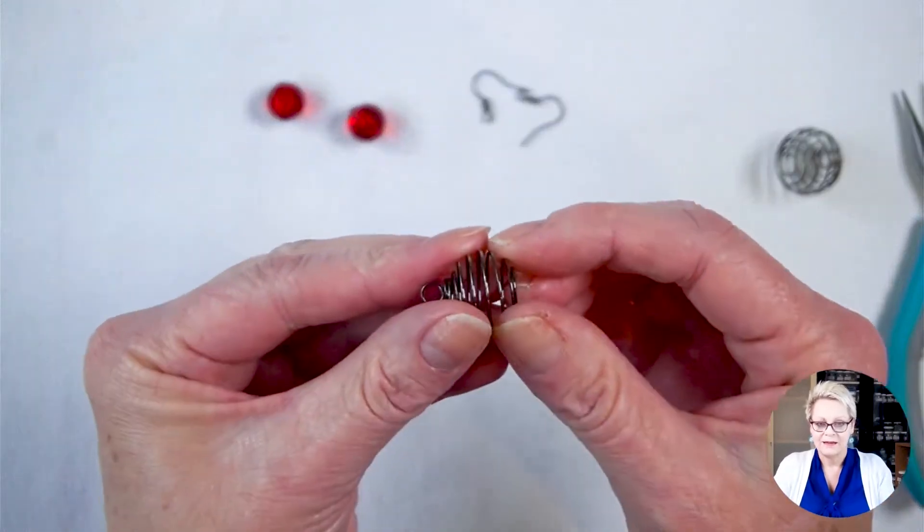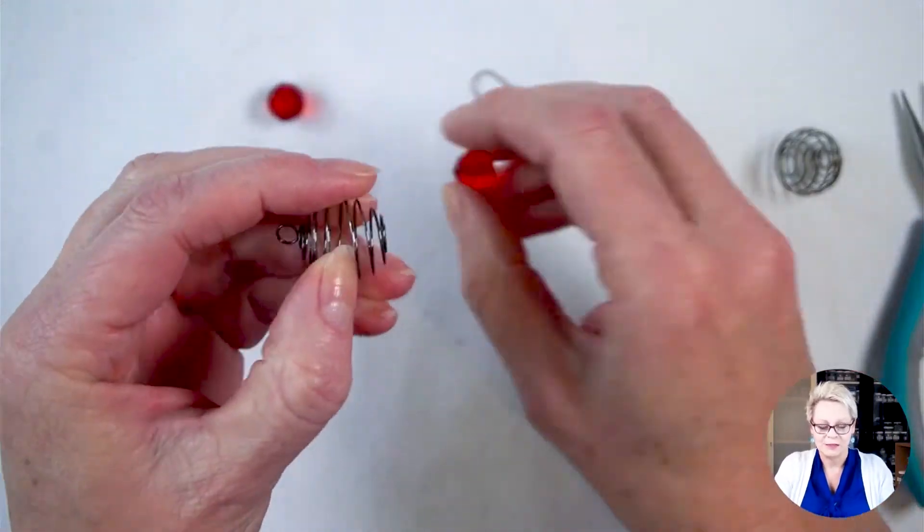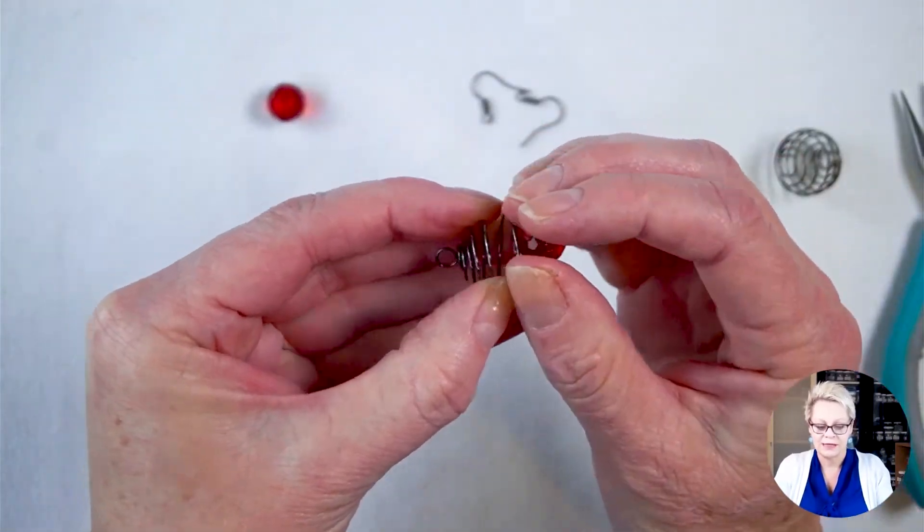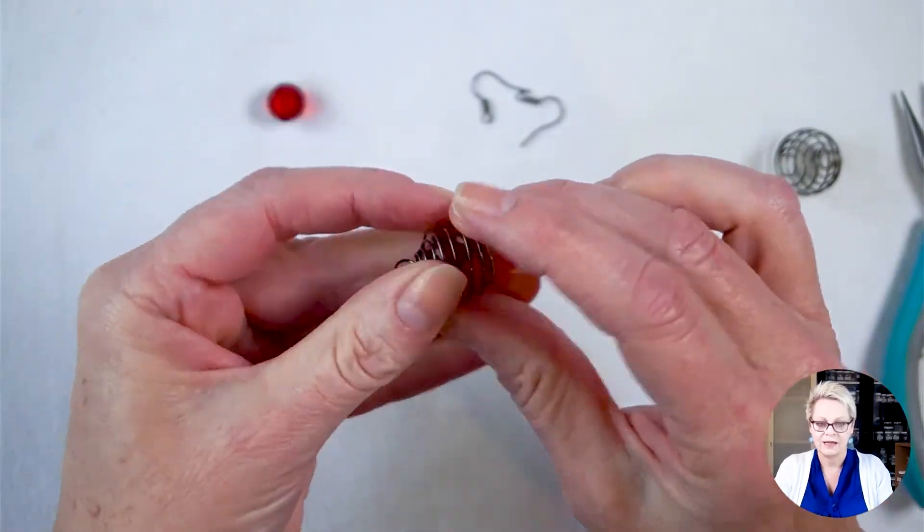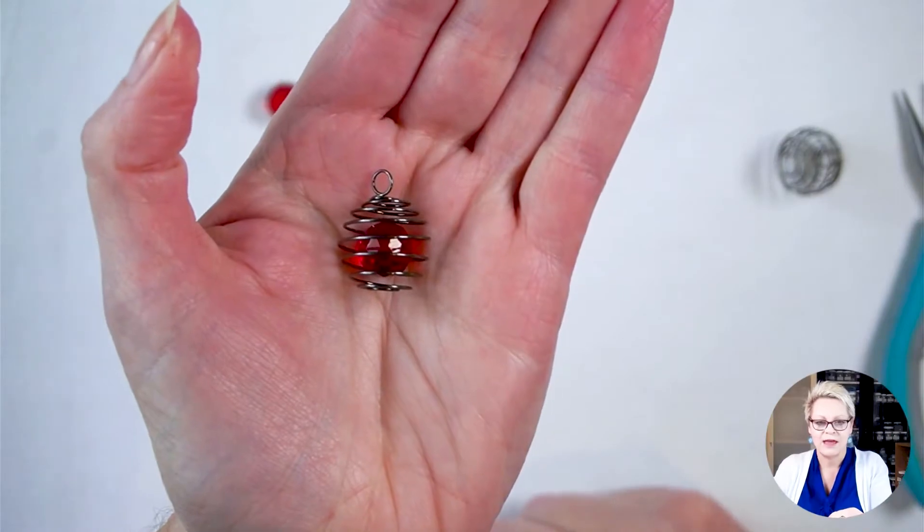All we're going to do is take our spring cage bead, and I'm going to slip the bead inside by just opening up the spring. Just like that. That's what I have.